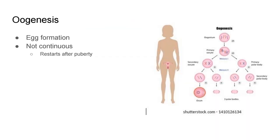Let's talk about what's called oogenesis — oogenesis is the making of the eggs, or egg formation. Oogenesis in females is not continuous like it is in males, like spermatogenesis is in males. Males are continually making sperm, especially once they hit puberty. In females, it's not that way.